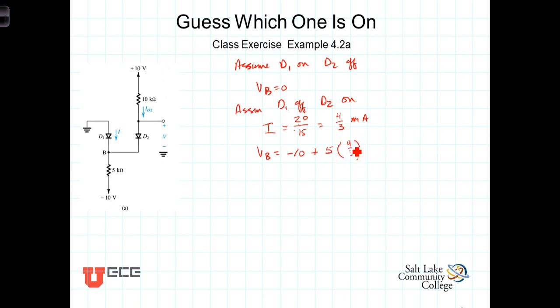Well, four-thirds of a milliamp, that's 20-thirds, 10 is negative 30-thirds. So negative 30-thirds plus 20-thirds, that gives us then a negative 10-thirds of a volt for V sub B. Well, if V sub B were negative 10-thirds, that's negative 3.33 volts, and this is zero volts, this diode would be forward biased also. So it's not true that D1 is off and D2 is on.